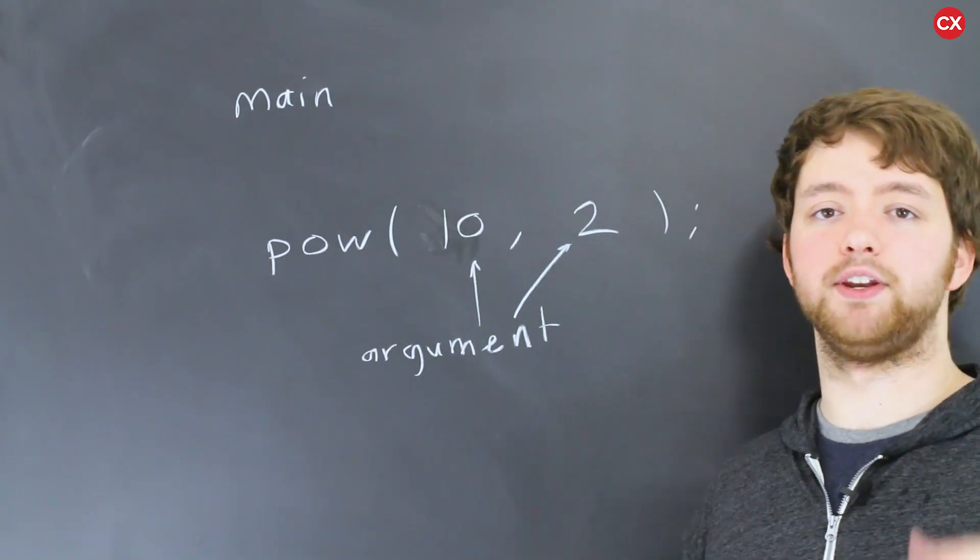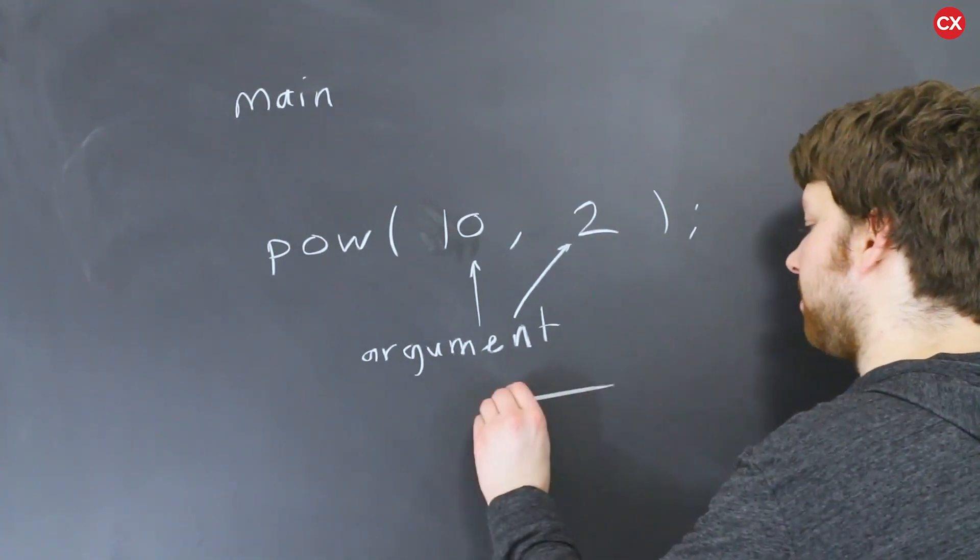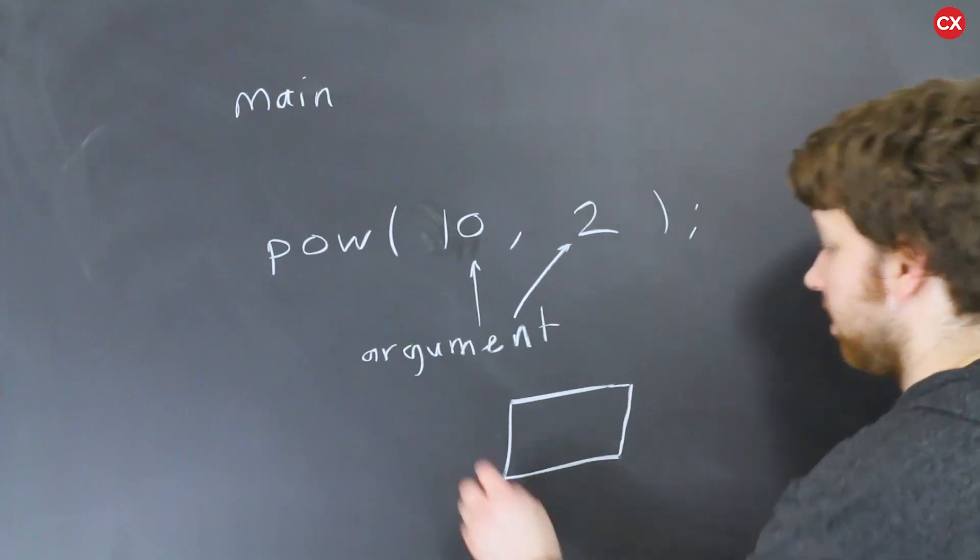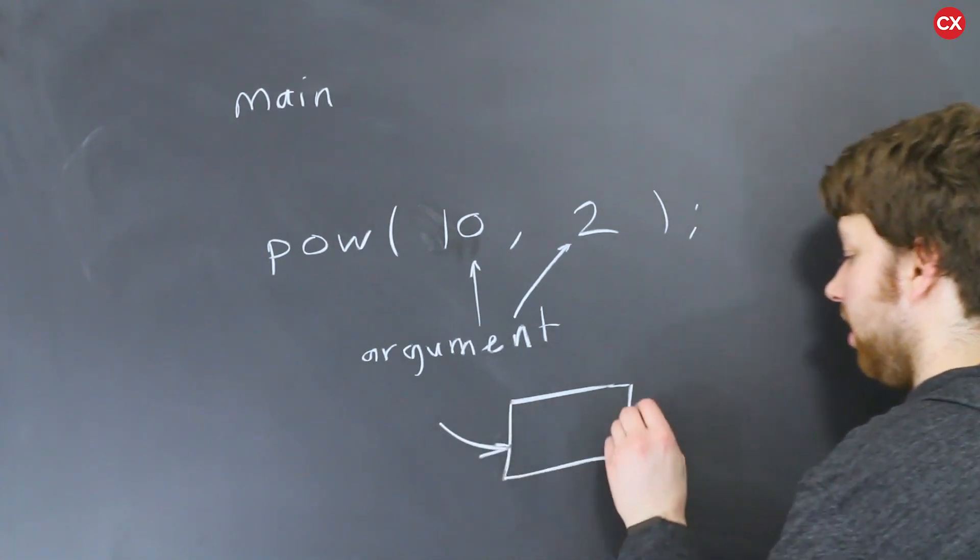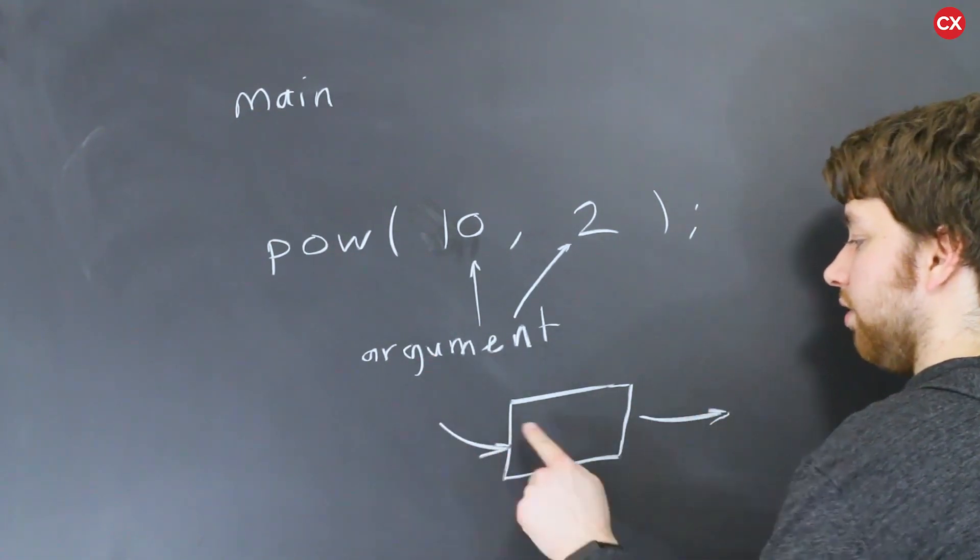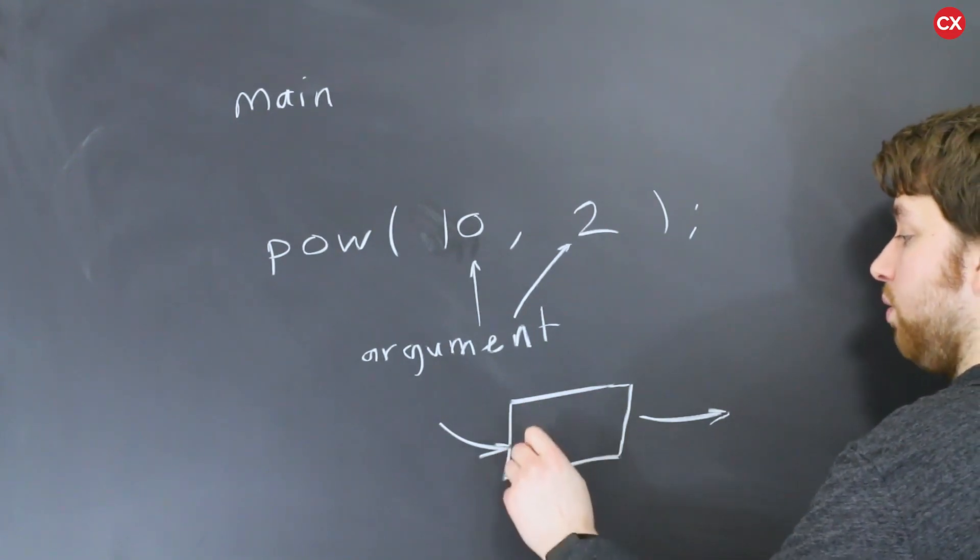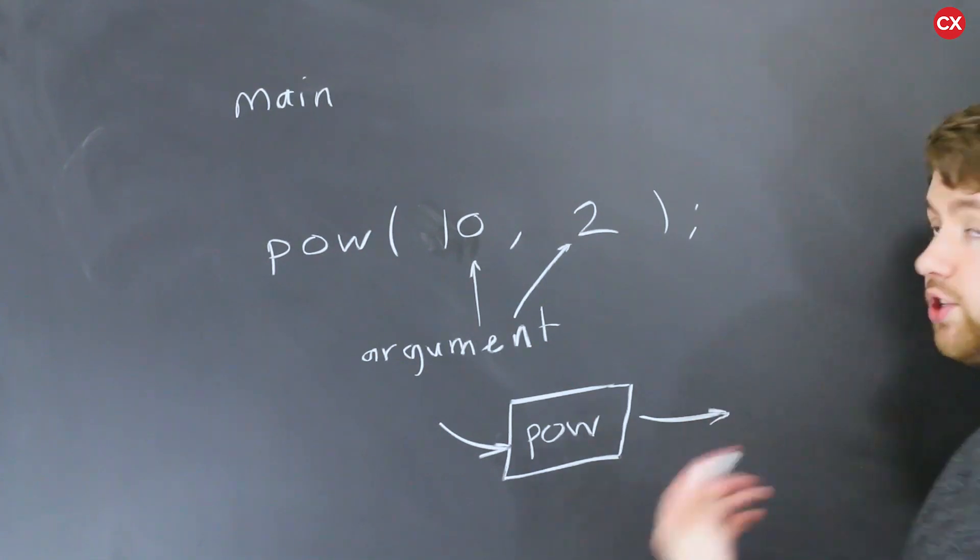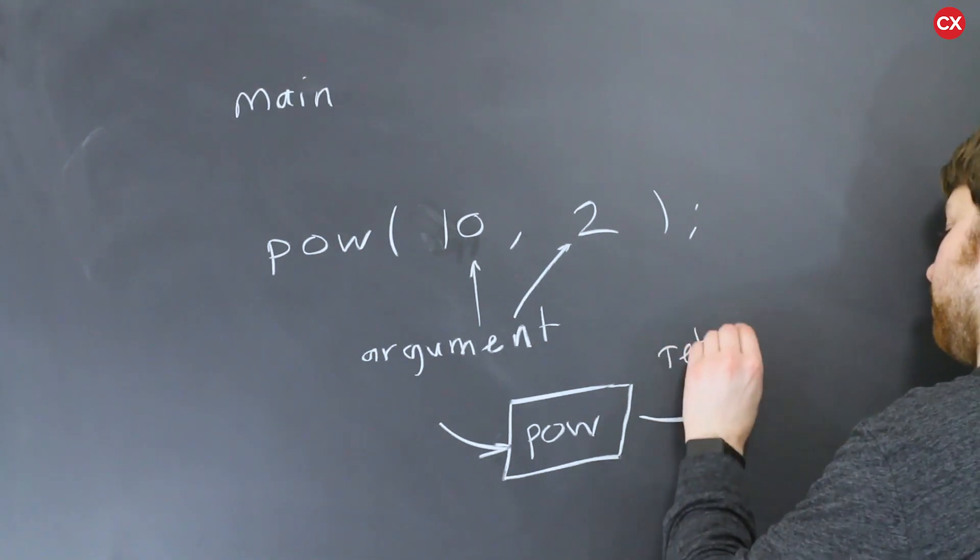Most of the time though, these functions are going to give an output. So if you remember back to my function machine I was talking about earlier, something that does something for us. We will have an input and we will have an output. The arguments are the input, pow is the machine, and the output is the return. So this is known as a return.